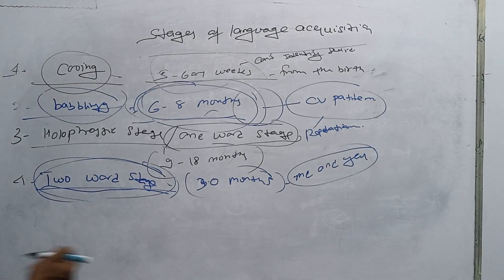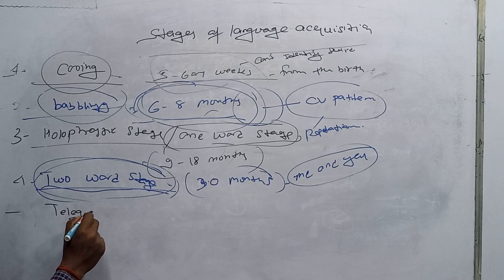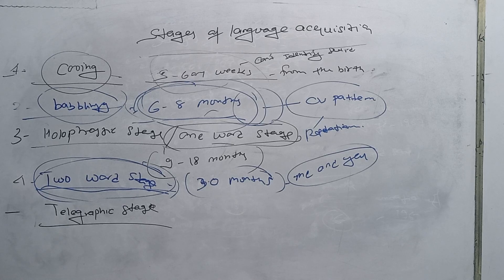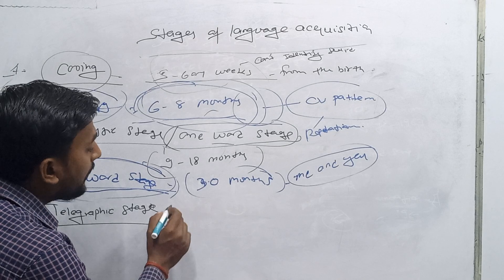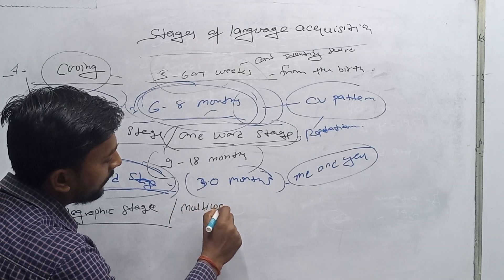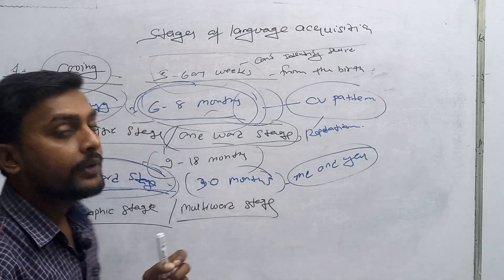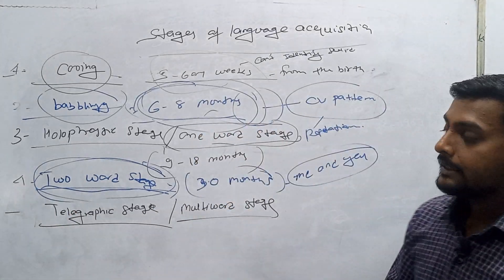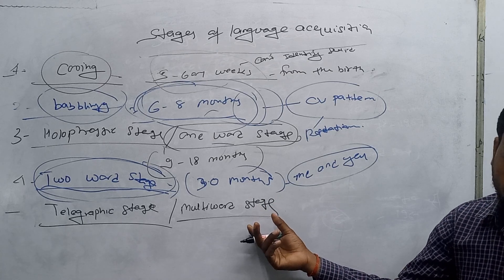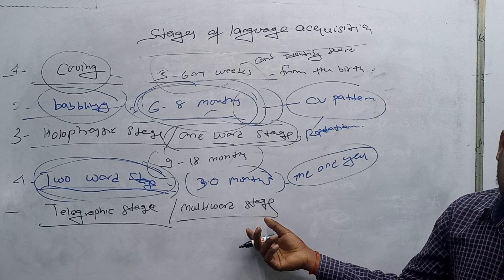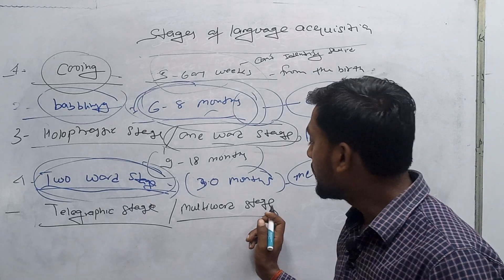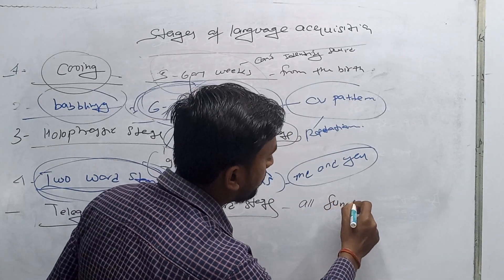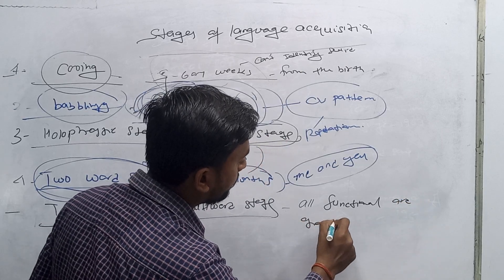We have another stage that is known as the telegraphic stage. The telegraphic stage is also known as the multi-word stage. By the name telegraphic or multi-word stage, we can find that at this stage almost all the functional and grammatical words are produced.